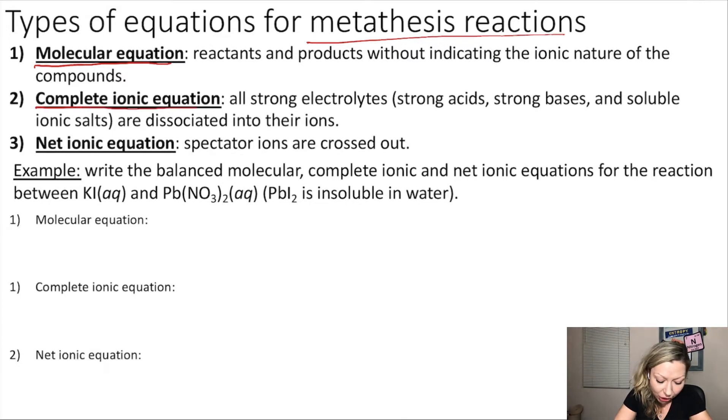Then we have a new one, the complete ionic equation, in which all strong electrolytes are going to be given as their ions, and net ionic equations, where we cross out the so-called spectator ions. I'm going to explain to you what spectator ions are.